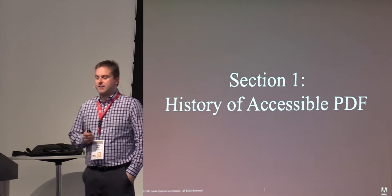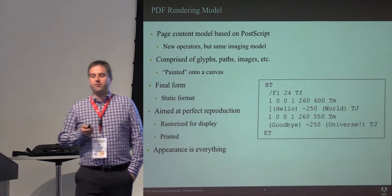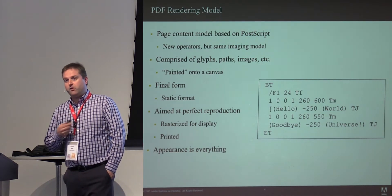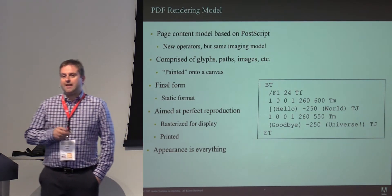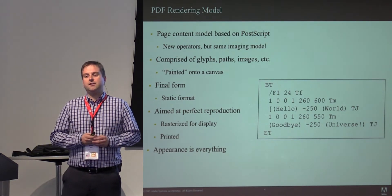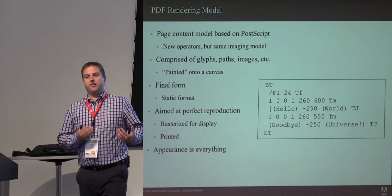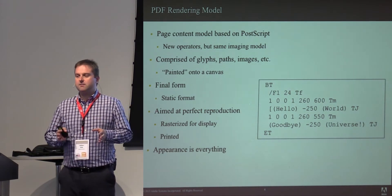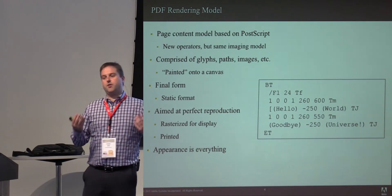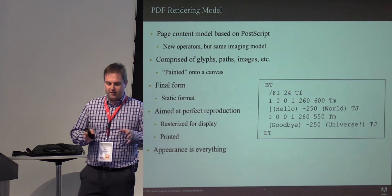A little bit about the history of accessible PDF. When PDF was first introduced in 1993, it was trying to solve a very specific problem — it was all about final form layout. It was adapting the PostScript rendering model and trying to make it more applicable to screens and distribution. It's based on the idea that you're painting things to a canvas, and you want those things to be painted in the correct location with the right color and correct properties — text, paths, images.